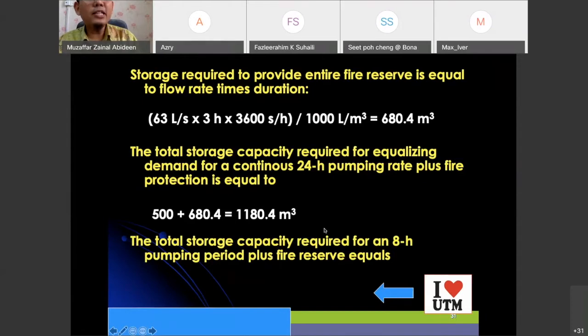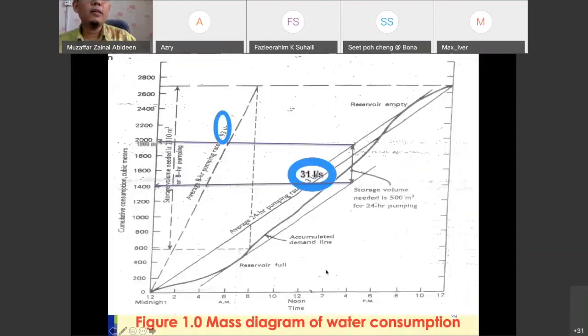The fire reserve is still the same, it's still 680.4 so we do not have problems on that. But now for the second part of the question, they only switch on for eight hours. What it means, instead of pumping the water for 24 hours, and that's why we have this pumping rate at 31 liter per second, they will only switch on the pump for eight hours.